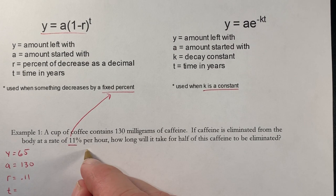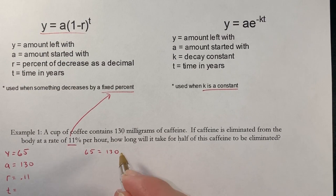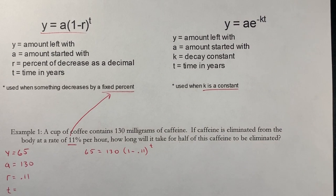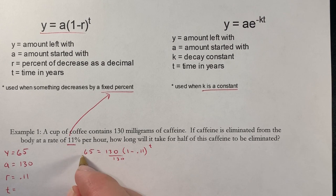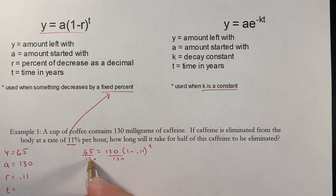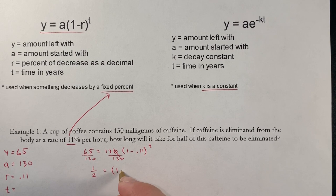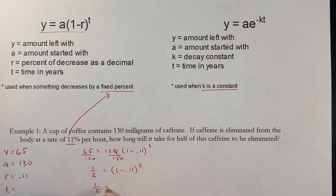So we have 65 = 130 × (1 - 0.11)^t. We divide both sides by 130, and since 65 over 130 is one half, we get 1/2 = (1 - 0.11)^t. One minus 0.11 is 0.89, so we have 1/2 = 0.89^t.